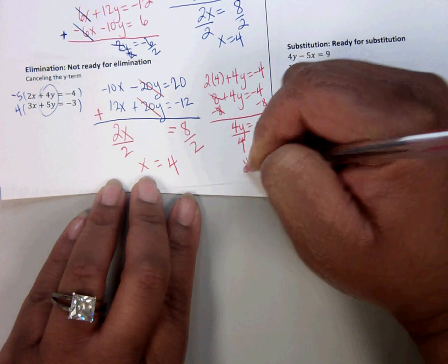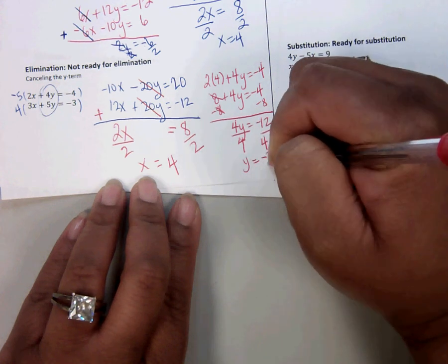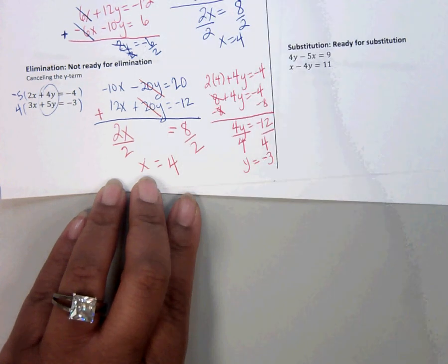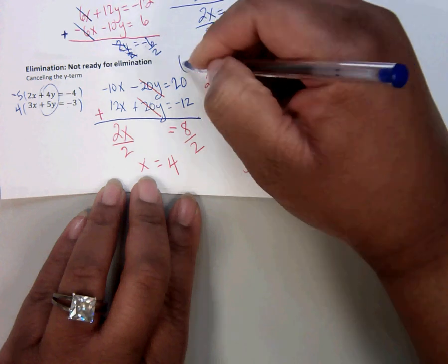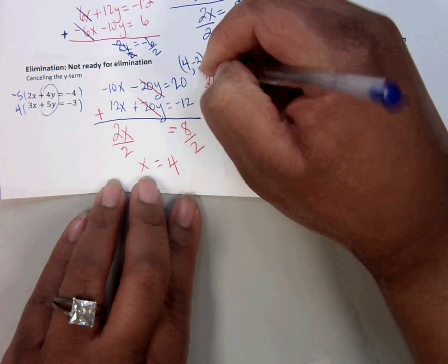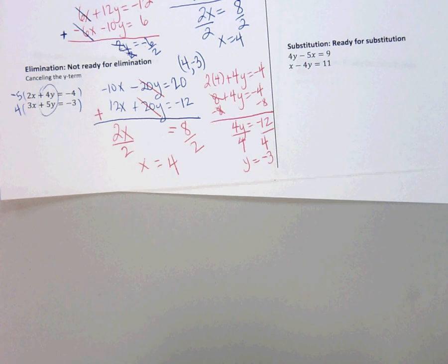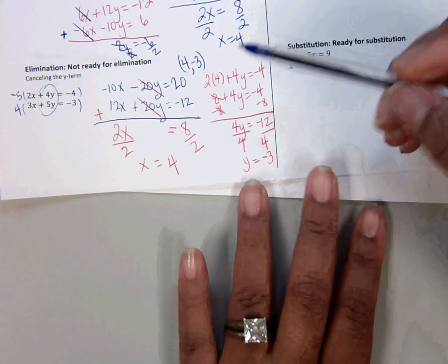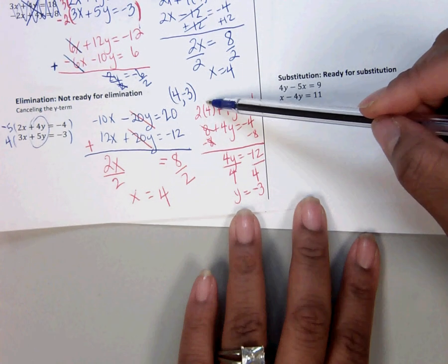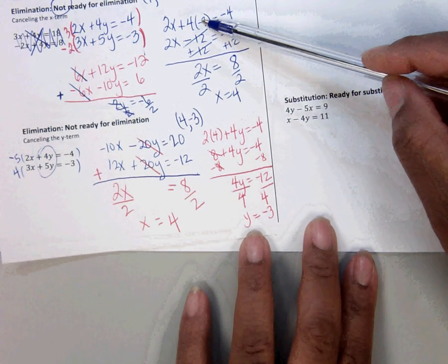4y equals negative 12. Divide by 4. And y equals negative 3. If we write that in print form. 4 negative 3. And we have completed. And we know that's the answer. Because this is the exact same problem we did here in this example. As you can see they match.